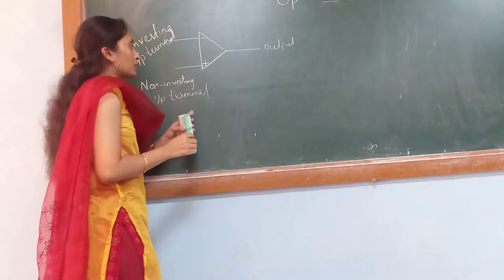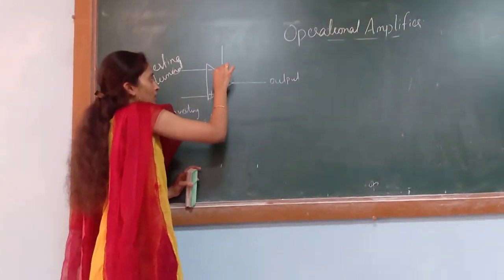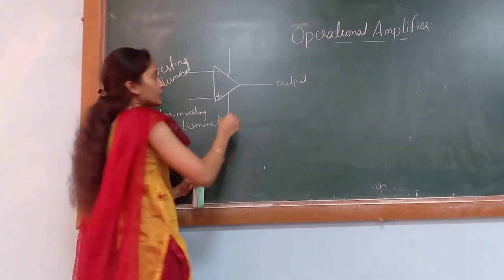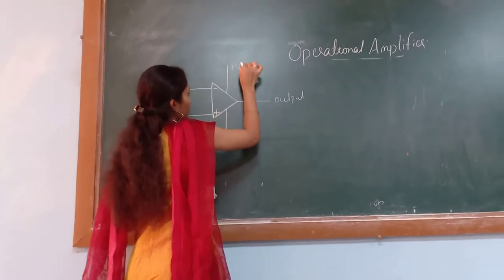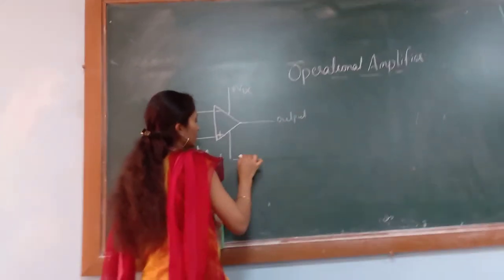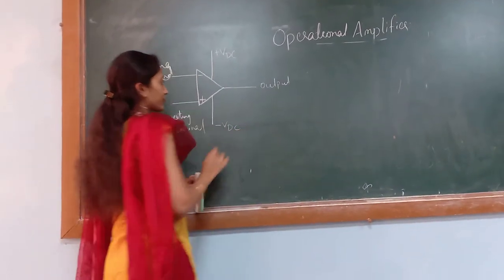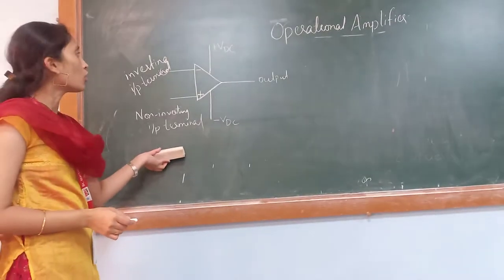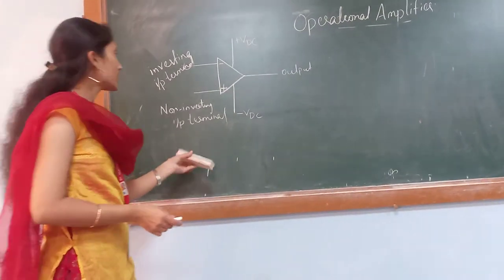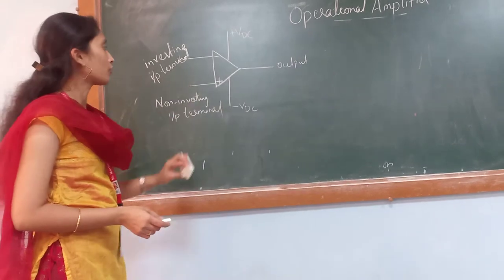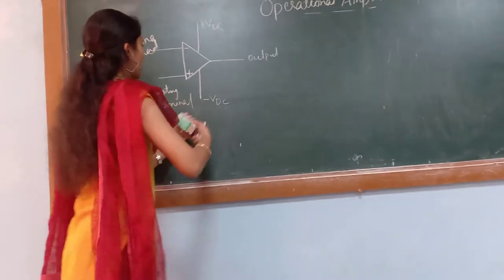To this operational amplifier there are two DC power supplies — we can say plus VCC and minus VCC. This is the schematic symbol of the operational amplifier. Let us now see the construction of an operational amplifier.